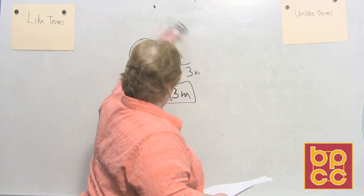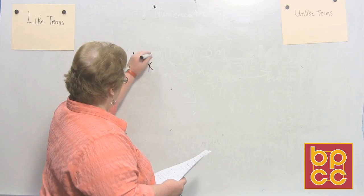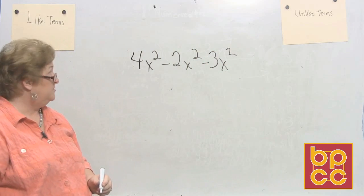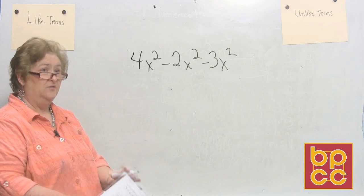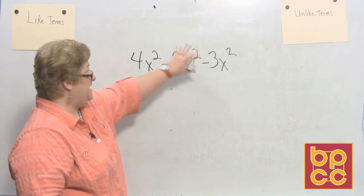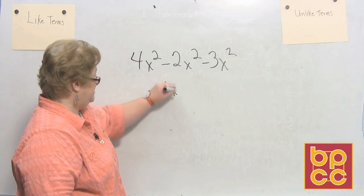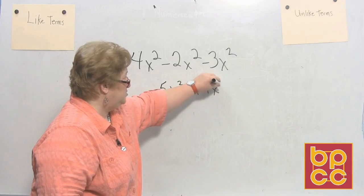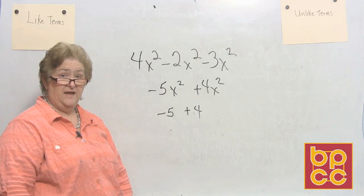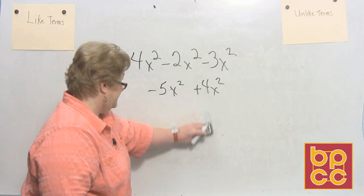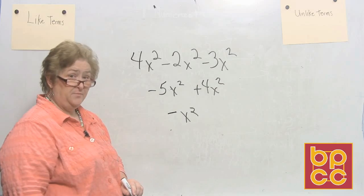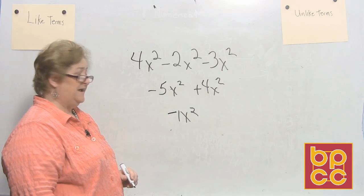Let's try: 4x squared minus 2x squared minus 3x squared. They're all x squared so we can bring them all together. We have 4x squared offset by a negative 2 and a negative 3 — that's a negative 5x squared total for the negatives. Then negative 5x squared plus 4x squared gives a negative x squared, or negative 1x squared, when we combine like terms.